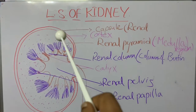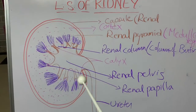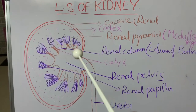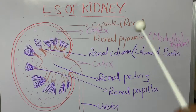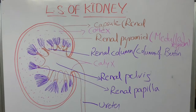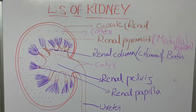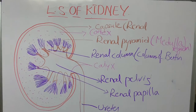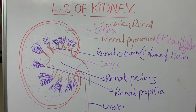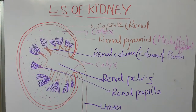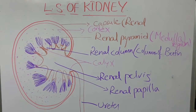In this longitudinal section, the kidney consists of two parts: the outer cortex and the inner medulla region. The kidney is covered by a capsule known as the renal capsule. The renal capsule is a fibrous tissue — whenever fibrous tissue is present, it gives strength and protects the organ inside.